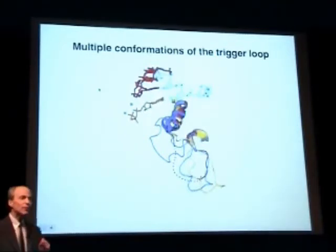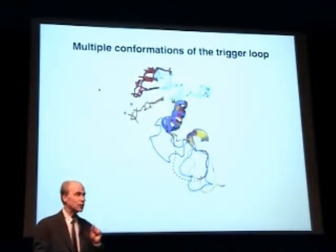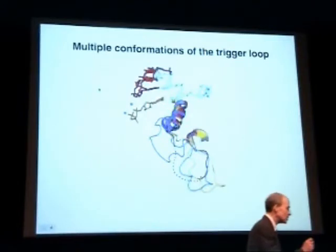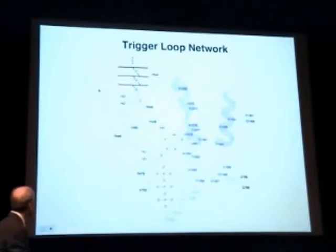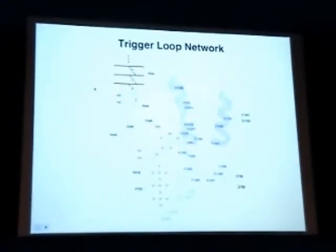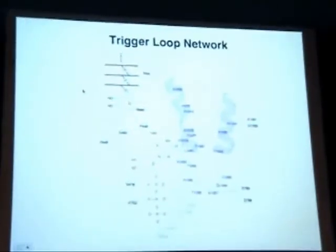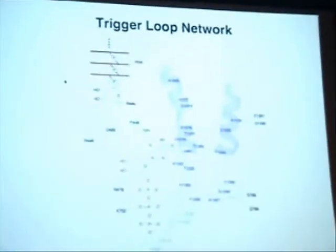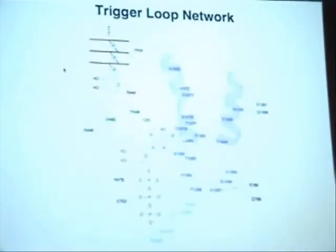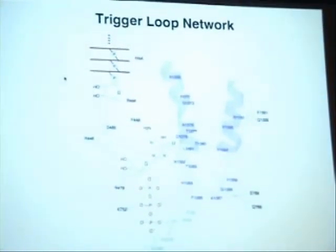The trigger loop is evidently a mobile element. It swings like a trap door beneath a correctly matched nucleotide in the addition site, making extensive contact with the nucleotide through a network of interactions. It contacts the nucleotide base, the beta phosphate, and both 2'-prime and 3'-prime hydroxyl groups of the sugar. It even contacts the 2'-prime hydroxyl group of the nucleotide just added to the growing RNA chain.